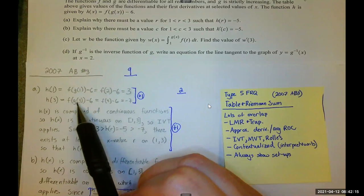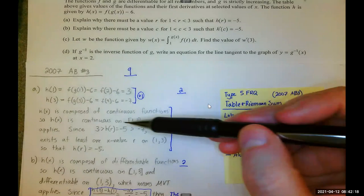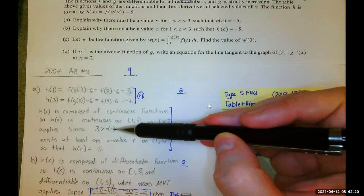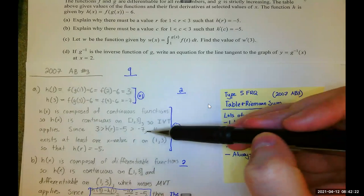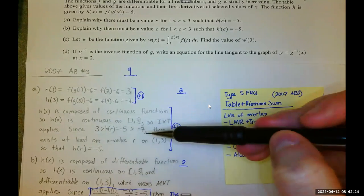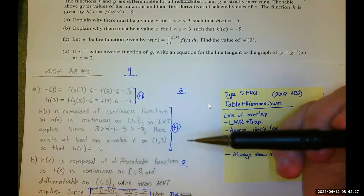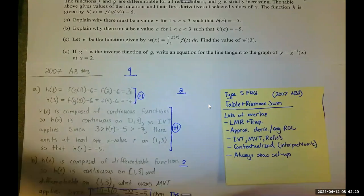Repeat the process. This time, X is 3. I can write my conclusion. So, H of R, which is negative 5, is between 3 and negative 7. There is at least one X value R on the open interval 1, 3, so that H of R equals negative 5.